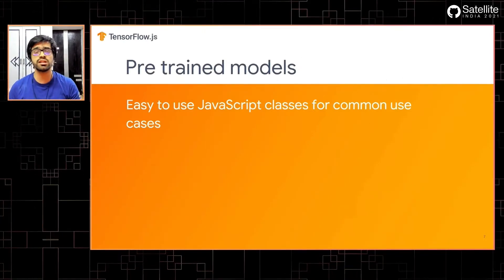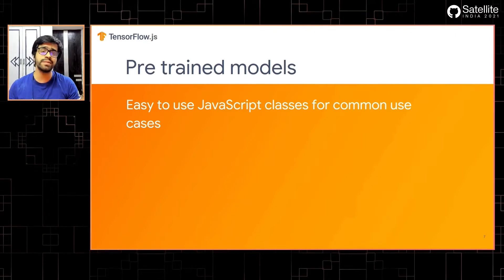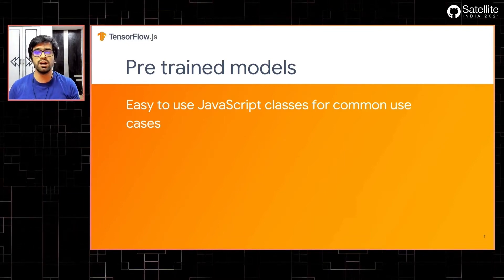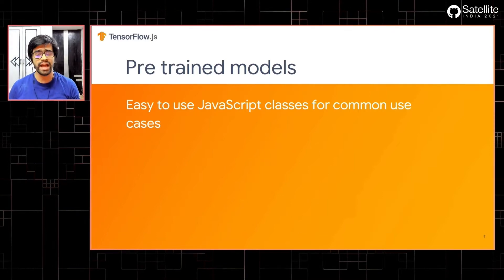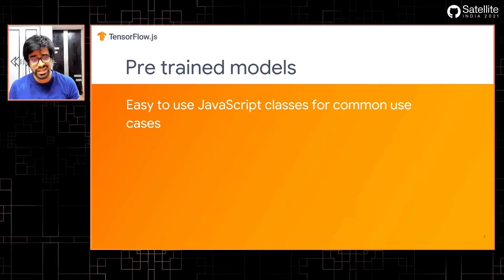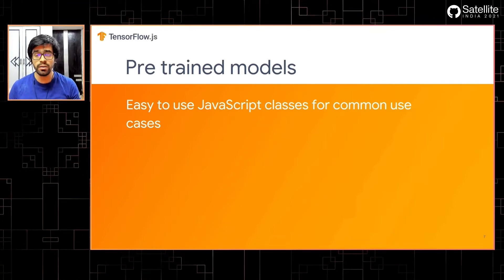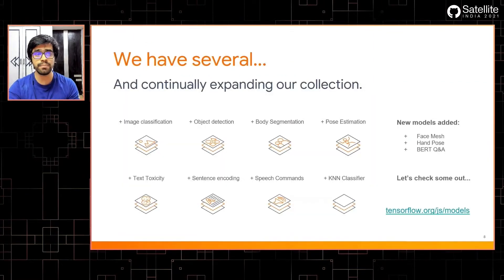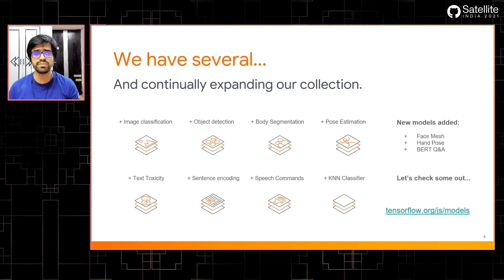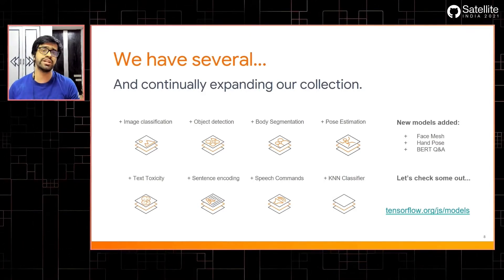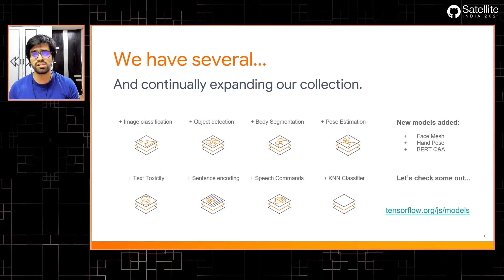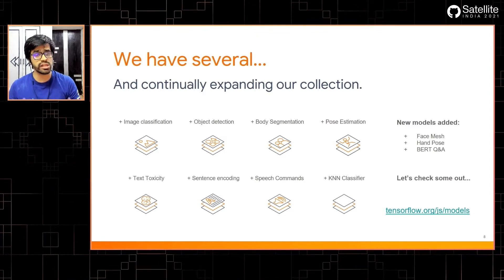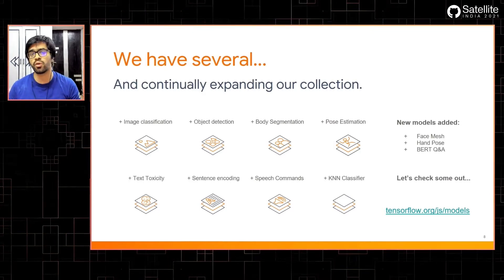The first category of models are the pre-trained models. These are completely easy-to-use JavaScript classes that are open-sourced and can be used with a single line of code embedded into your JavaScript project. There are many situations when you might not need to create a specific model and can directly use existing models for small applications. Examples include image classification, object detection, body segmentation, pose estimation, and NLP tasks like text toxicity and speech commands. You can visit these models at tensorflow.org/js/models, where you'll find GitHub links for all of them.